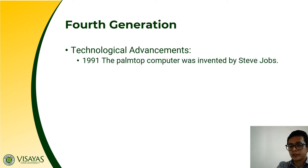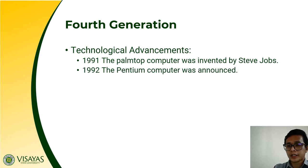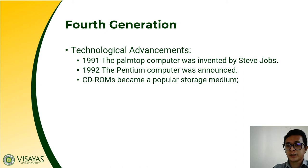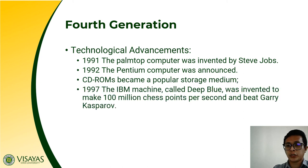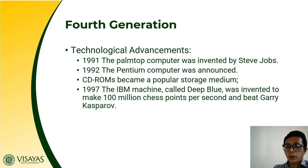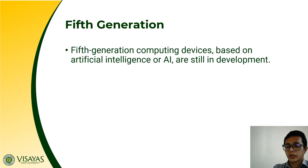In 1991, the PalmTop computer was invented by Steve Jobs, who founded the Apple Corporation. In 1992, the Pentium computer was announced, and CD-ROMs became a more popular storage medium. In 1997, the first IBM machine called the Deep Blue supercomputer was invented, capable of making 100 million chess moves per second, and it beat Gary Kasparov, who was the reigning chess champion. These are some of the key technological advancements of the fourth generation of computers.